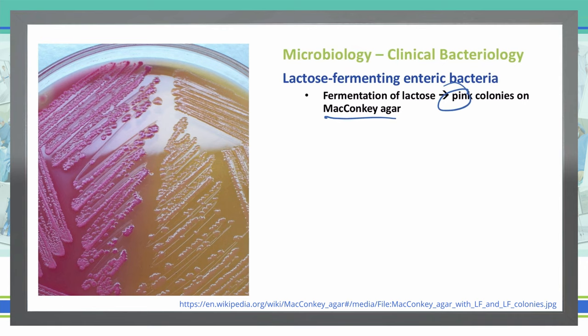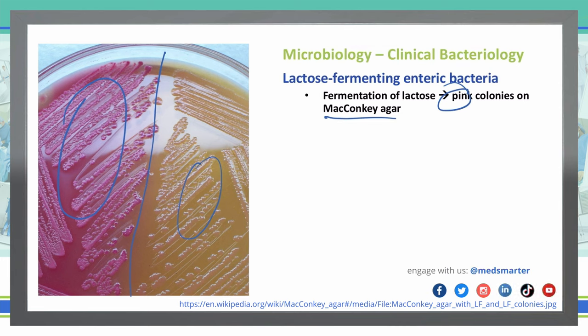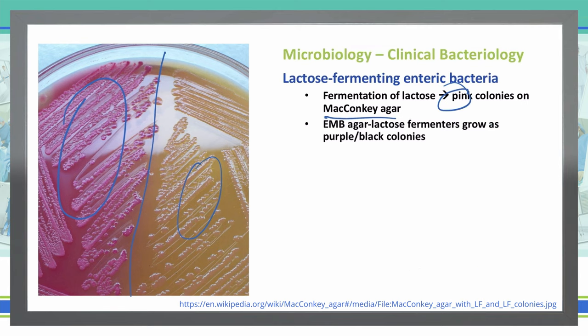As you can see here, down the middle we have lactose fermenters on the left and non-lactose fermenters on the right. We can also use EMB agar, and those lactose fermenters will grow kind of purple and black colors if they are a lactose fermenter on the EMB agar. On a regular plate, you will see E. coli actually grows with a green sheen to it, which is very characteristic of E. coli.